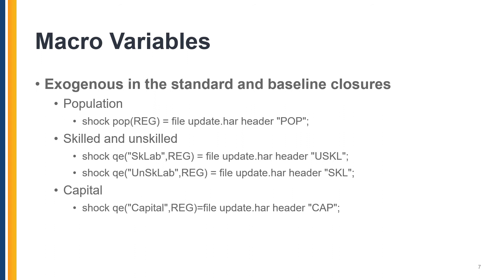Variables representing population, quantity of skilled and unskilled labor, and capital are exogenous in both the standard GTAP closure and the baseline closure, and can be shocked by historical percent changes — for example, changes from 2014 to 2018 if you would like to update the benchmark year from 2014 to 2018. The corresponding shock statements included in the experiment file are shown on this slide. The file update.update.harl contains historical percent changes in the exogenous variables.